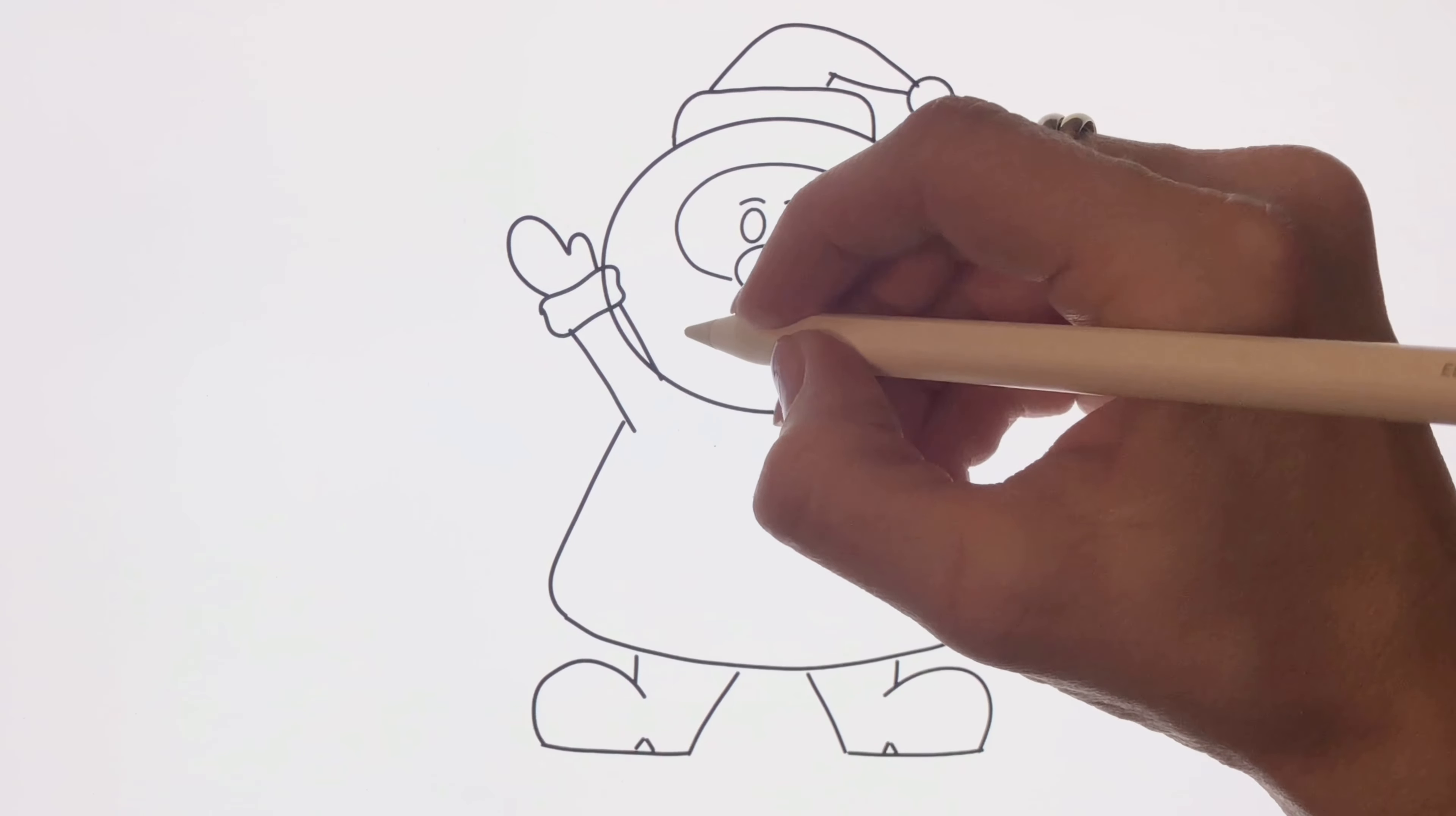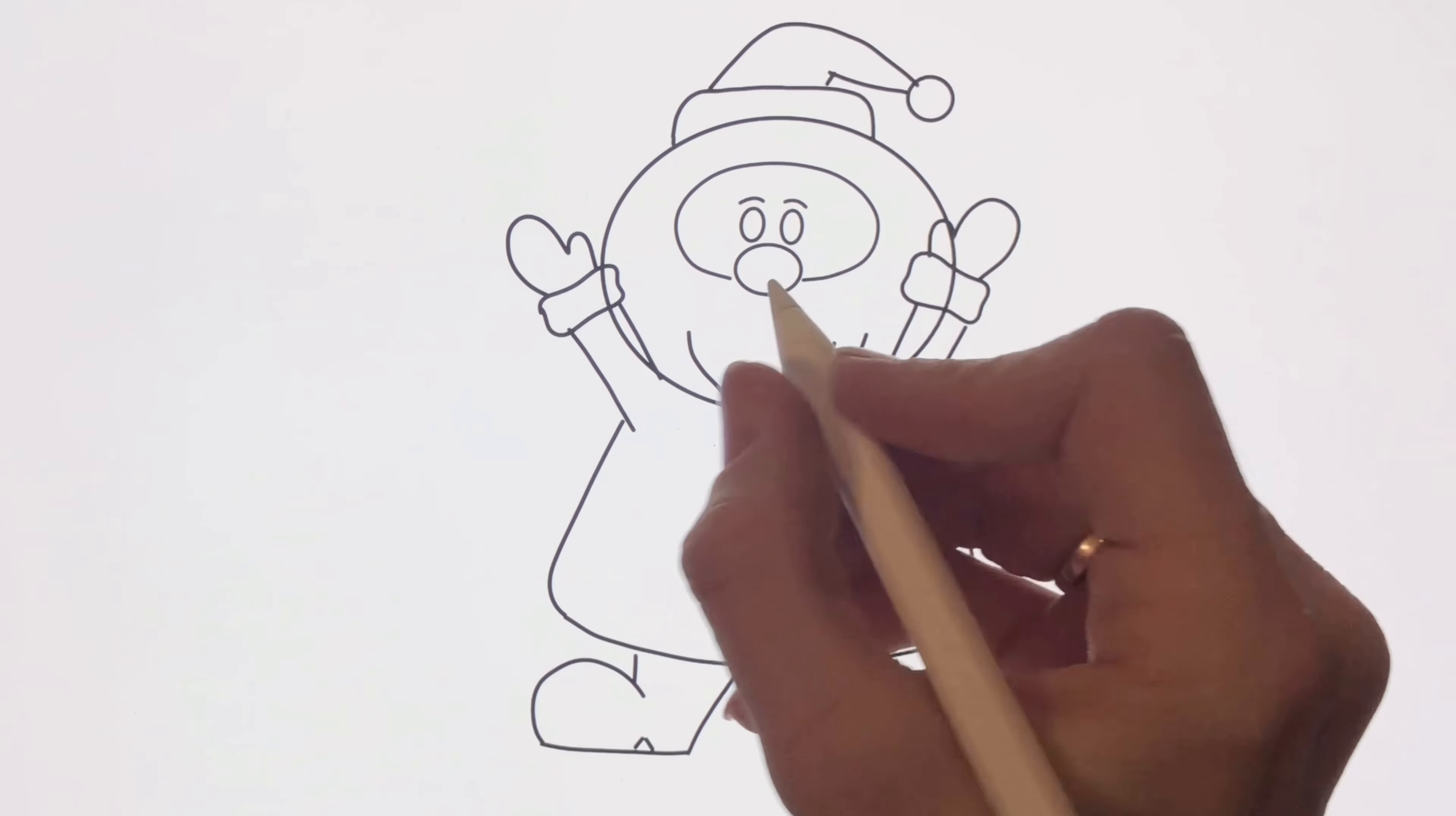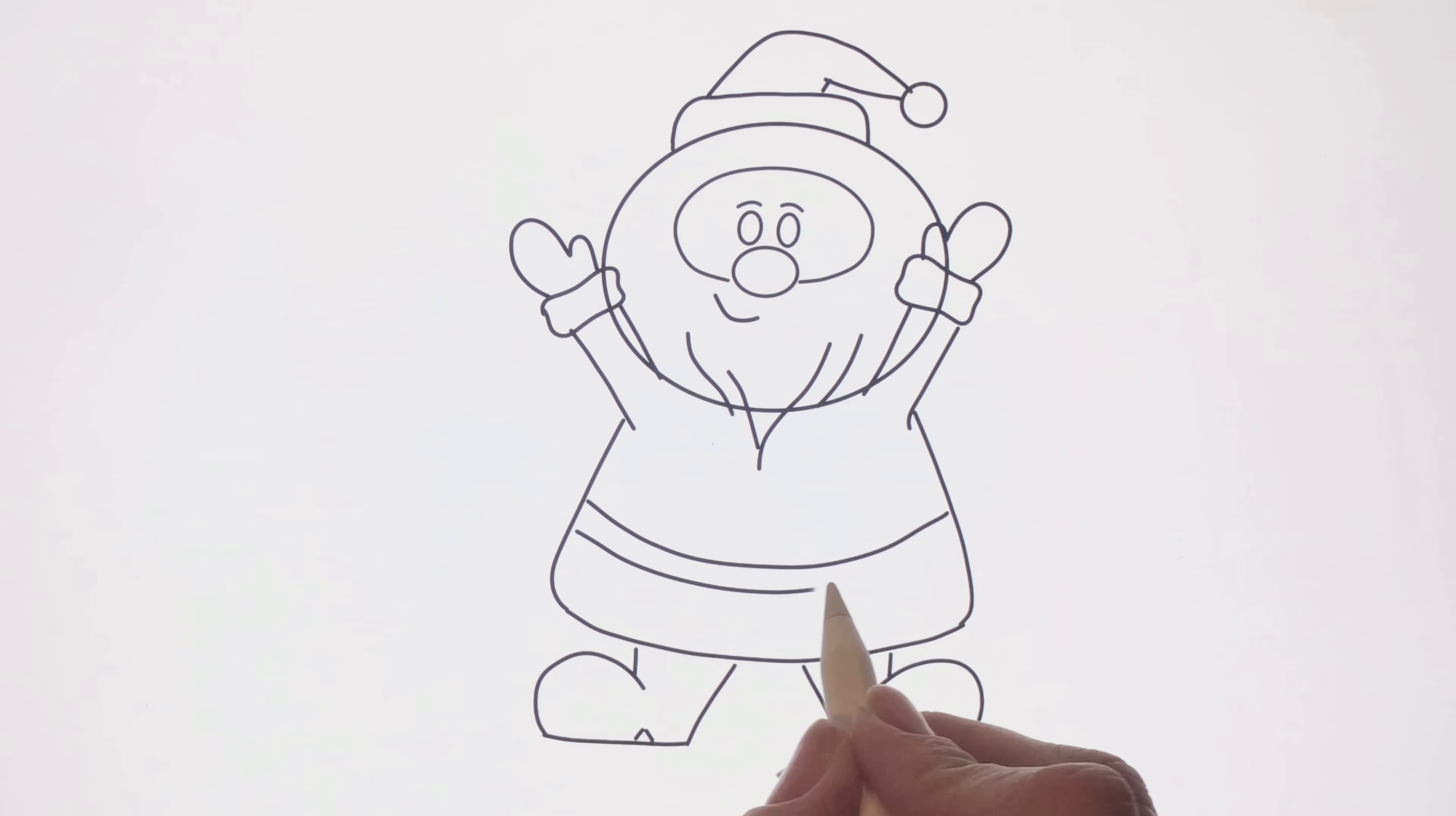Now draw some details to make the beard look more natural - some longer and shorter lines, exactly like you like. Add a mouth - Santa's smiling. Drawing the belt - two long lines on top of the jacket.